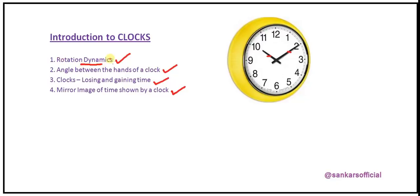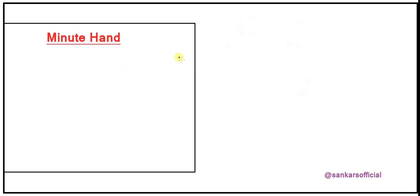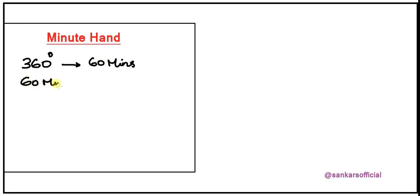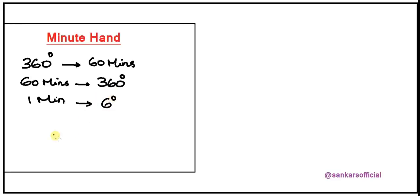The first concept is based on the rotation dynamics associated with the hour hand and the minute hand of a clock. The minute hand of a clock covers 360 degrees in 60 minutes. This means in one minute, the minute hand moves by 360 divided by 60, that is equal to 6 degrees. So if the minute hand has moved by 6 degrees, we can conclude that one minute has just elapsed.